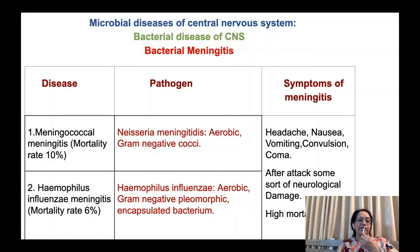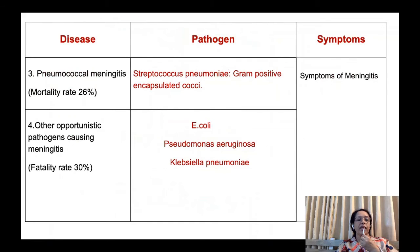The second causative agent is Haemophilus influenzae meningitis. Mortality rate is up to 6%, and the causative agent is Haemophilus influenzae, which is an aerobic, gram-negative, pleomorphic, encapsulated bacterium. The third disease is pneumococcal meningitis, with a mortality rate quite high at up to 26%. Streptococcus pneumoniae, which is a gram-positive encapsulated coccus, is the causative agent. Other organisms also cause meningitis.